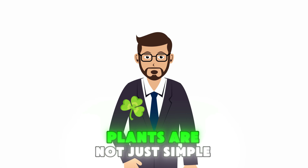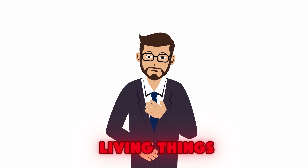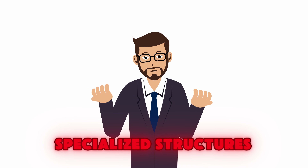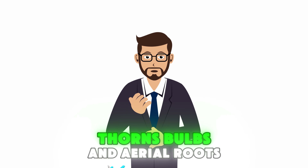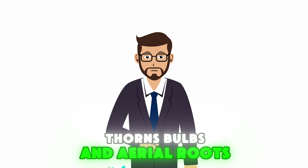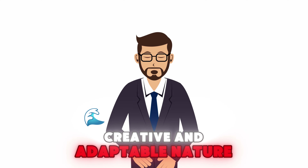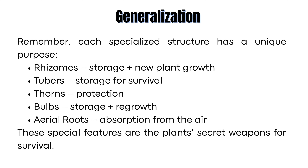So as you can see, plants are not just simple living things — they are survivors. Their specialized structures — rhizomes, tubers, thorns, bulbs, and aerial roots — are proof of how creative and adaptable nature can be. Remember, each specialized structure has a unique purpose: rhizomes for storage plus new plant growth; tubers for storage for survival; thorns for protection; bulbs for storage plus regrowth; and aerial roots for absorption from the air. These special features are the plant's secret weapons for survival.